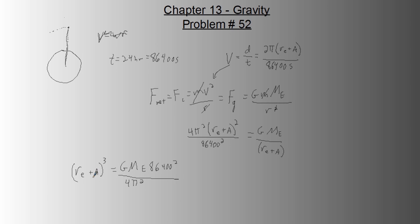And then we'll cube root both sides. Another way of doing that, if your calculator doesn't have a cube root feature, is to just raise it to the one-third power. And we know everything in here. So that becomes r_e plus a equals this number. So a equals all of this minus r_e, and that equals 3.59 times 10^7 meters.